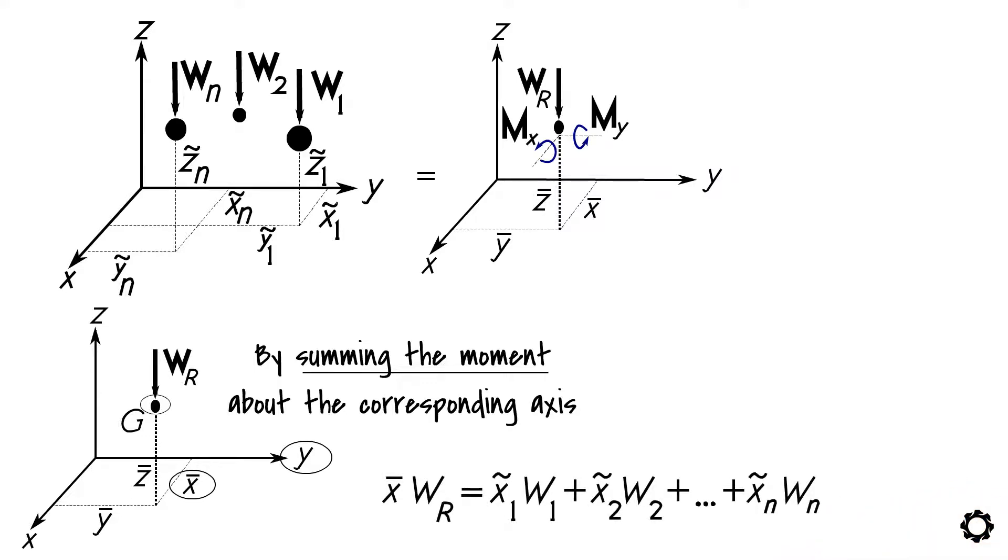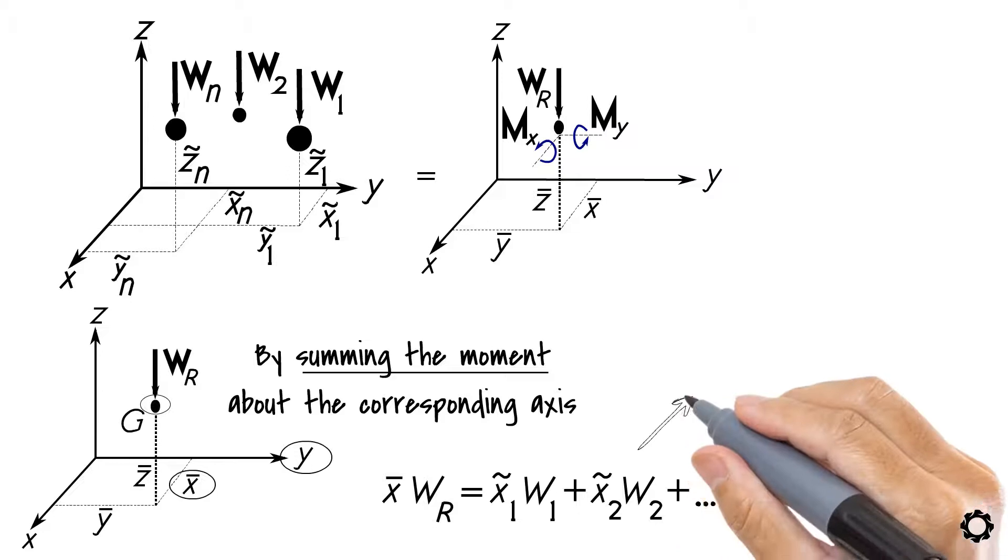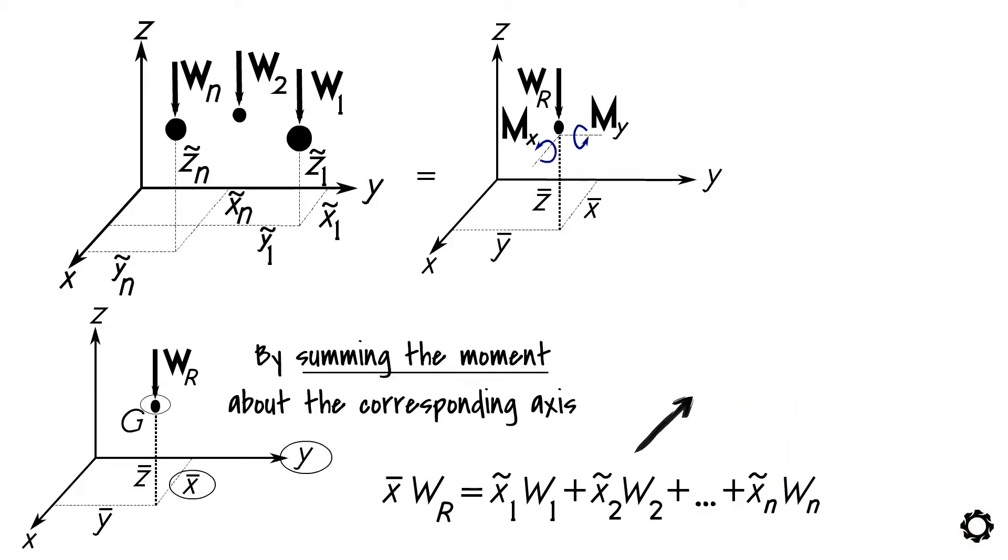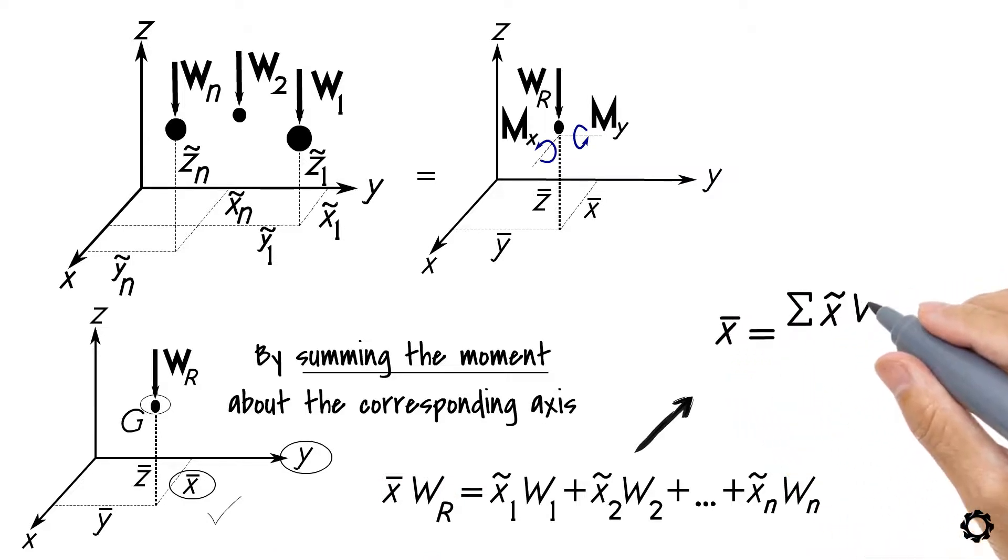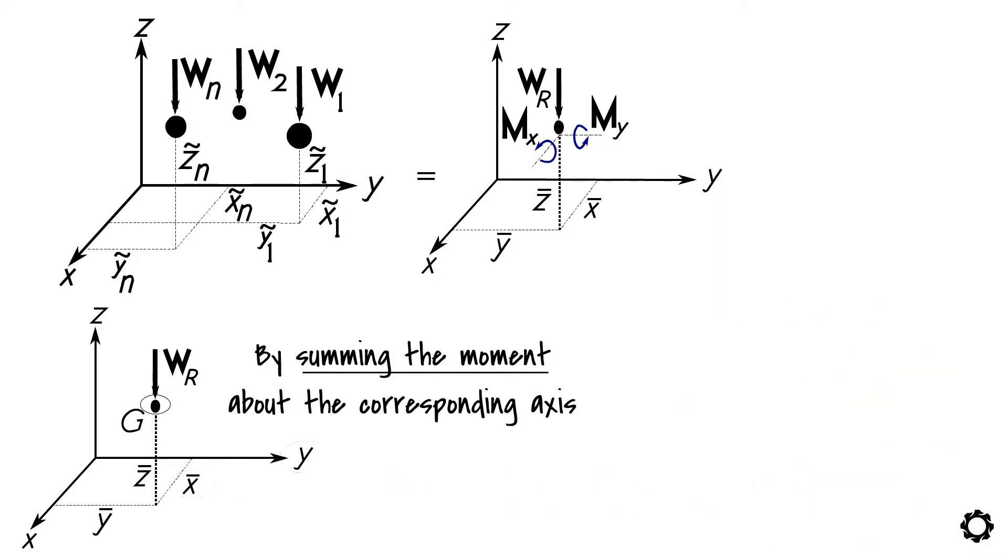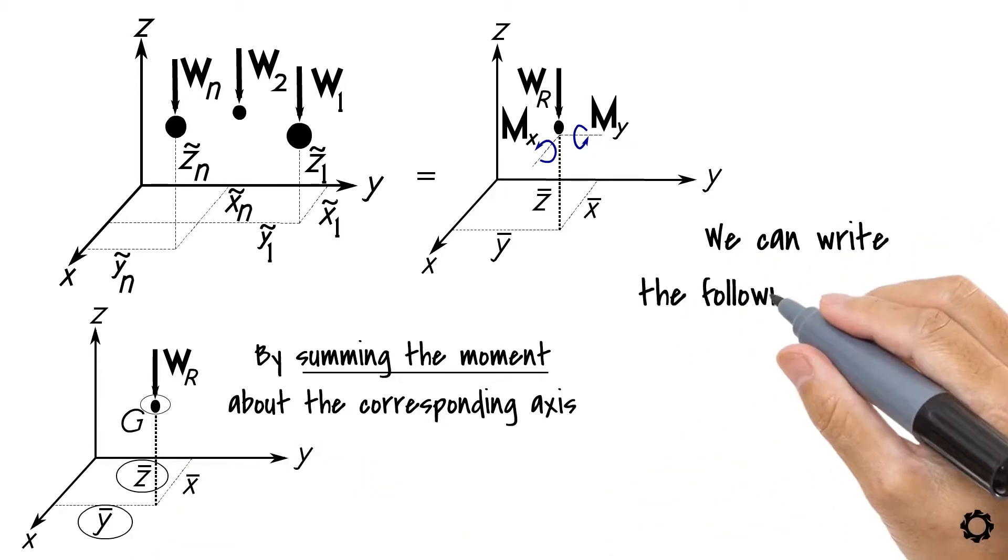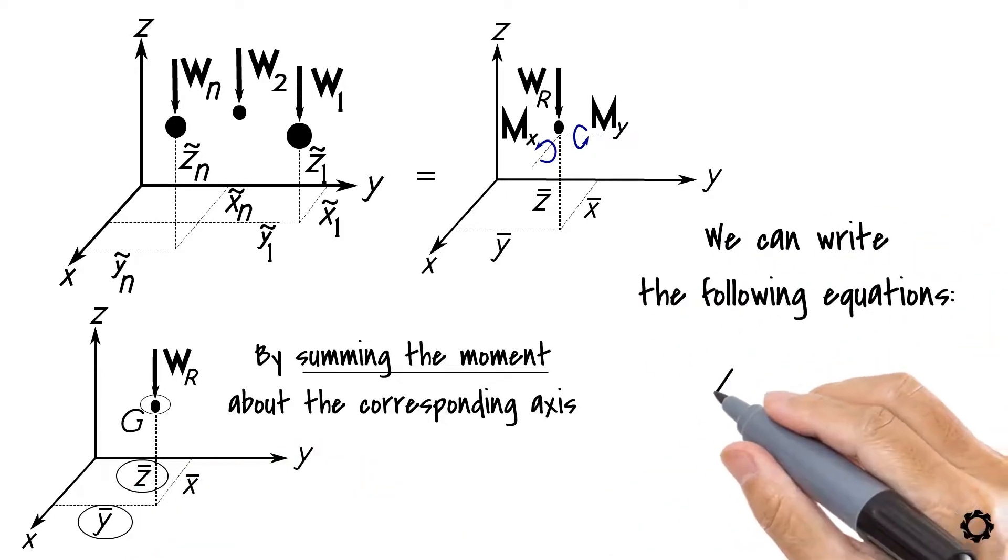Then, after generalizing the formula, we can write it into the form which we can use to obtain the x-bar coordinate of G: x-bar equals summation of x tilde times W divided by summation of W. By doing the same procedure for finding y-bar and z-bar coordinates of G, we can write the following equations for obtaining their coordinates.